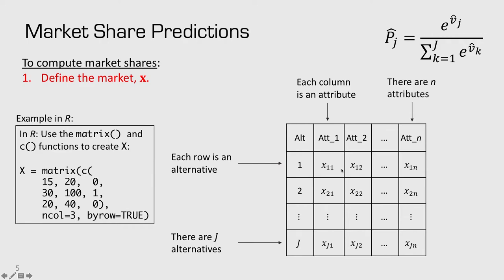In R, we use the matrix function to assemble these matrices with the c function, which stands for concatenate. You can write this all in one line, or type the numbers on different rows where each alternative is a different row. Attribute one, attribute two, and attribute three correspond to each column. You have to tell the matrix function how many columns there are — in this case three. And you must use by row equals true to read the numbers left to right; if by row equals false it reads top to bottom and populates the matrix incorrectly.